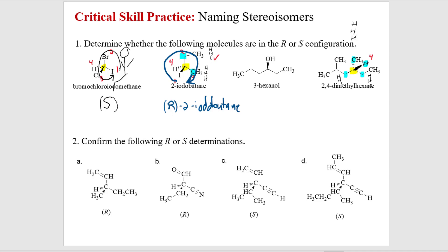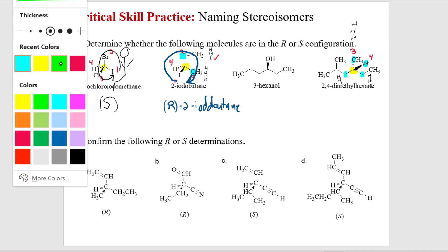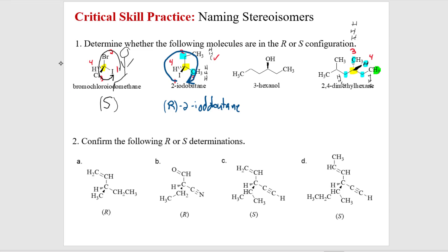The bottom two are tied, and the top methyl is definitely not the winner — so that's third priority. To break the tie between first and second, go one more layer out. One side reaches a dead end with just hydrogen; the other side has a carbon. That carbon wins — priority one and priority two. The carbon on the left had more carbons to play, while the carbon on the right ran out of cards.